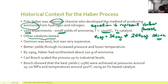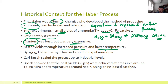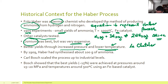He did test other catalysts, including osmium, which was a very good catalyst but unfortunately very expensive. For it to go into production you need high yields to justify expensive components. What he also found was that he gained better yields through increasing the pressure and lowering the temperature. These are fairly important points that explain why an increase in pressure and moderate temperature are chosen — they link very much to Le Chatelier's principle.